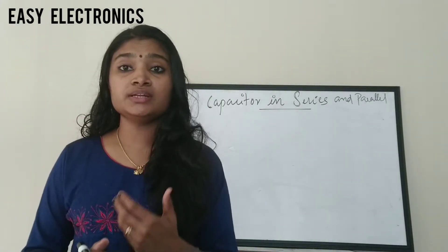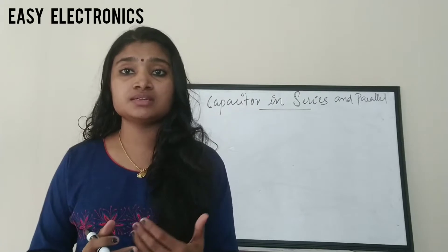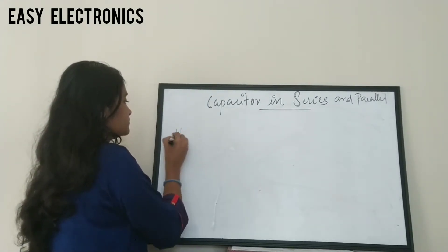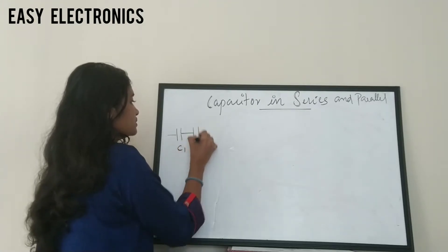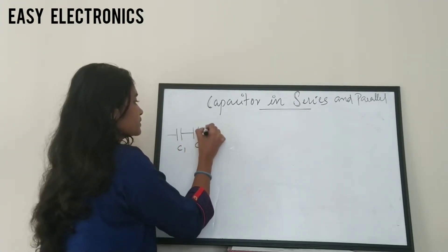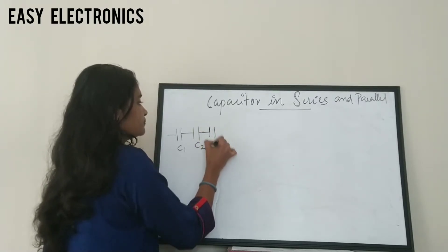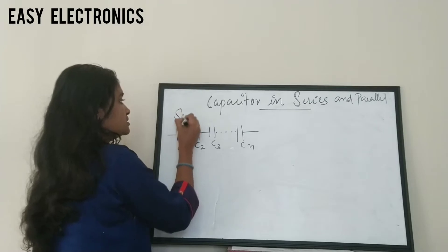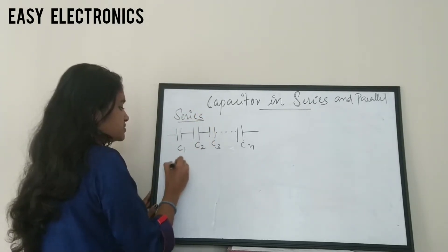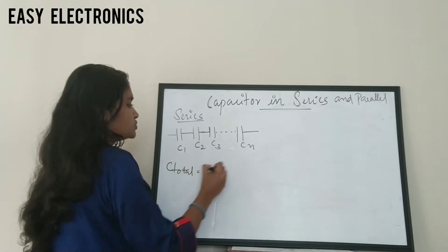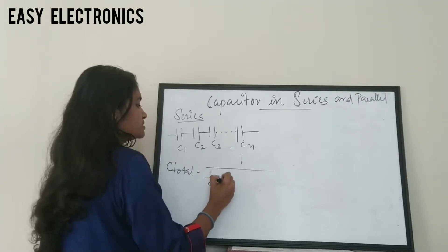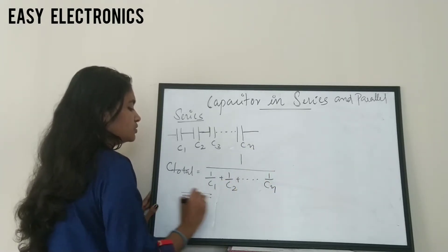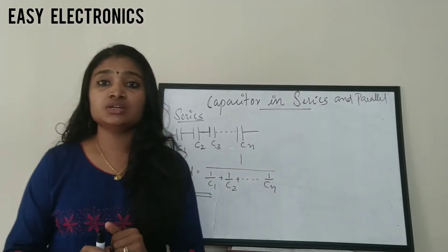Next we will see how the equivalent capacitance changes when capacitors are connected in series and in parallel. For the series case, with capacitors C1, C2, C3 up to Cn, the total capacitance is: 1/C_total = 1/C1 + 1/C2 + ... + 1/Cn. This is the equivalent capacitance when capacitors are connected in series.